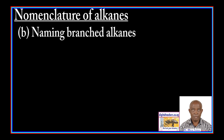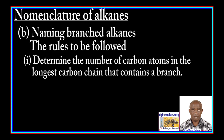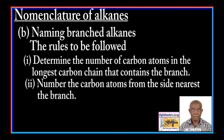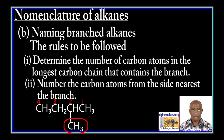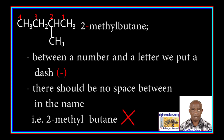Then, naming branched alkanes. The following are the rules to be followed. Rule 1: Determine the number of carbon atoms in the longest carbon chain that contains a branch. Rule 2: Number the carbon atoms from the side nearest the branch. For instance, in the compound below, a methyl group is bonded to the second carbon atom in butane, and the name is methylbutane.